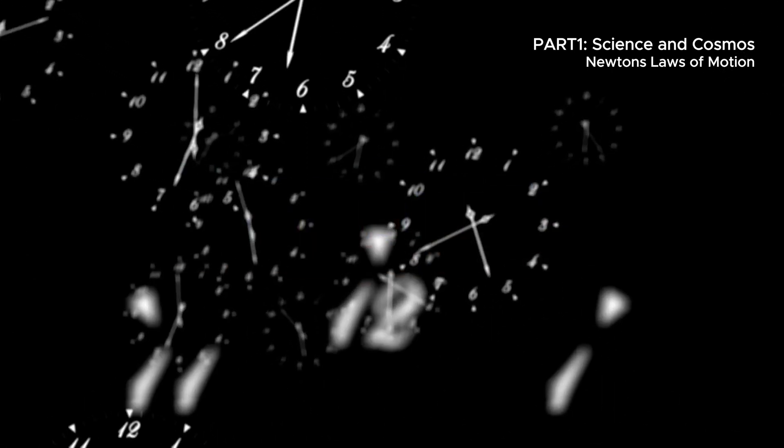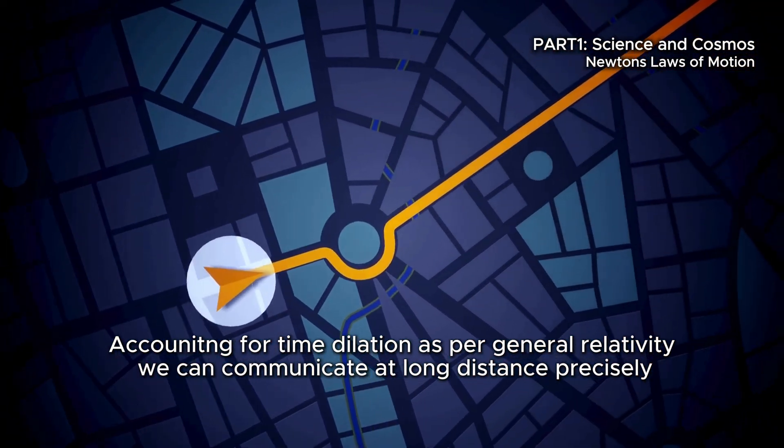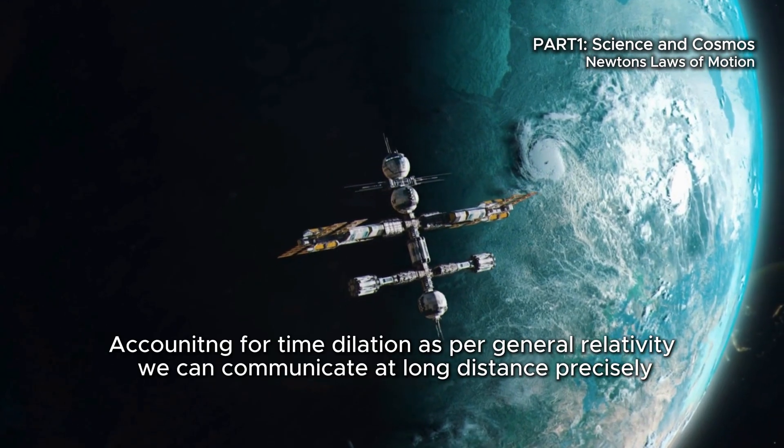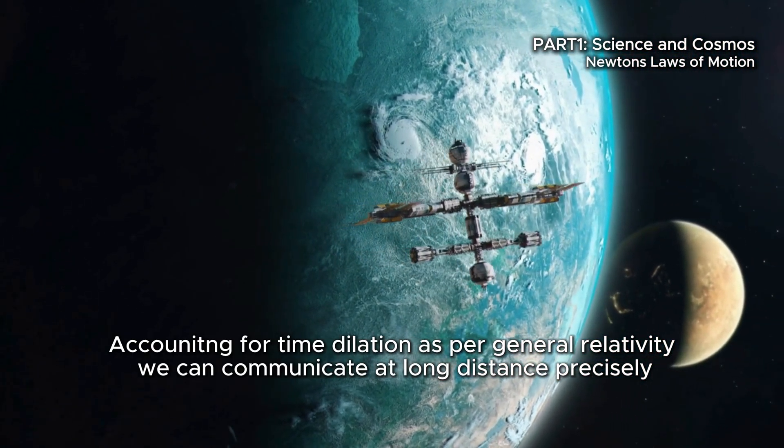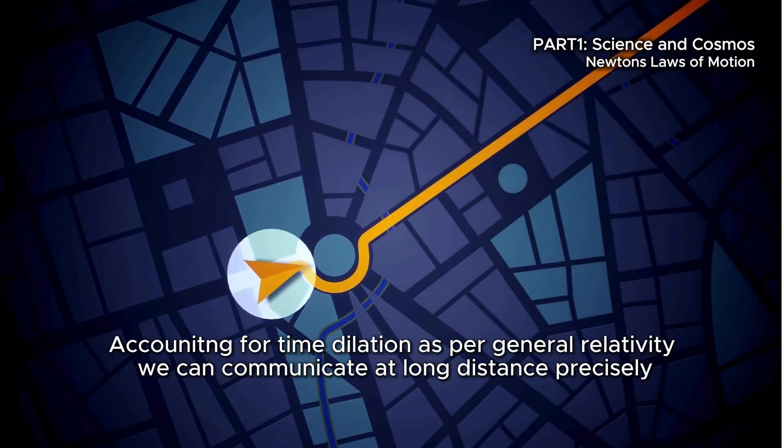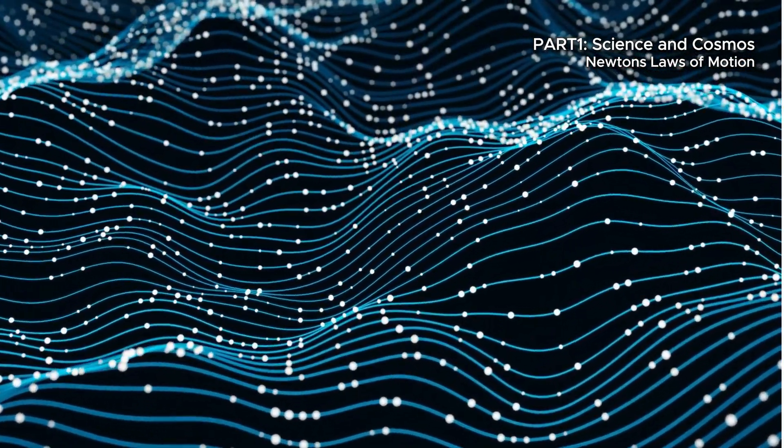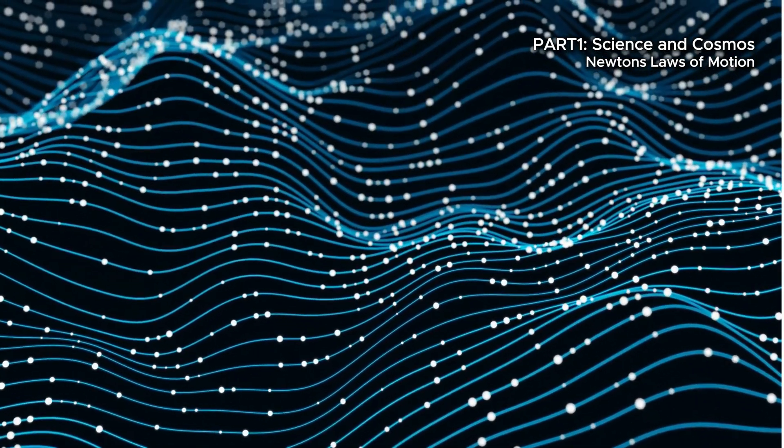This isn't just abstract theory. It's the reason satellite communication and GPS systems even work. Satellites orbiting Earth experience time differently than we do on the surface, and unless we account for this time dilation predicted by Einstein, GPS would drift by kilometers each day. Einstein didn't erase Newton. He expanded him. Newton helped us predict the universe. Einstein helped us understand it.